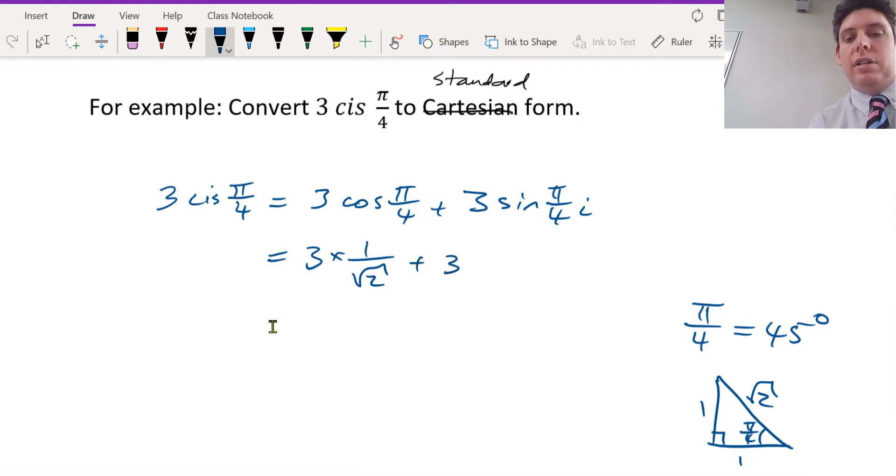Very good. And sine is the same. So opposite over hypotenuse, 1 over square root 2.